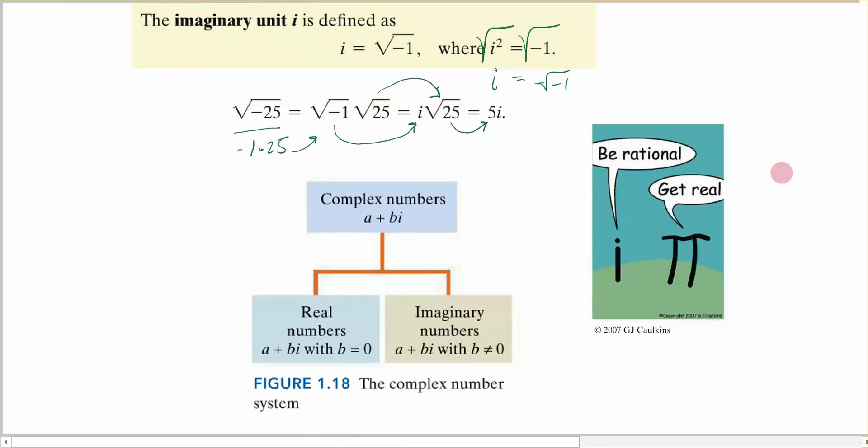Now that we have imaginary numbers defined, we can talk about complex numbers. Complex numbers are simply the formation of both a real part and an imaginary part. We don't always have both parts, but a strange thing to think about is that all numbers can be represented as complex numbers.